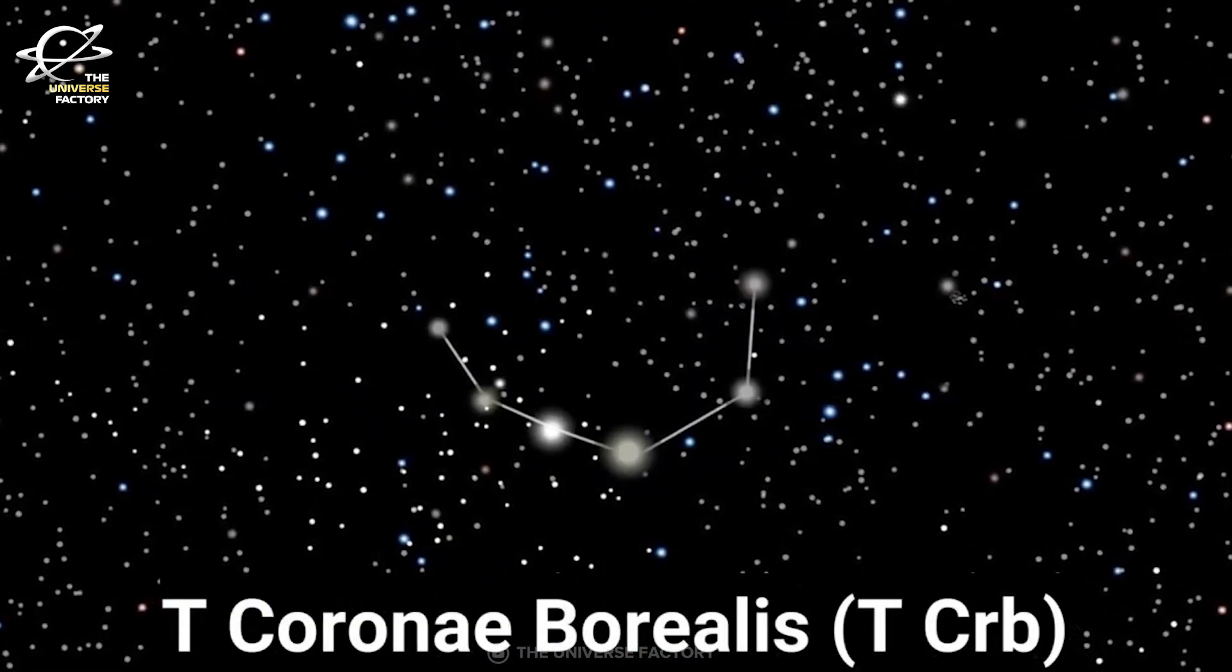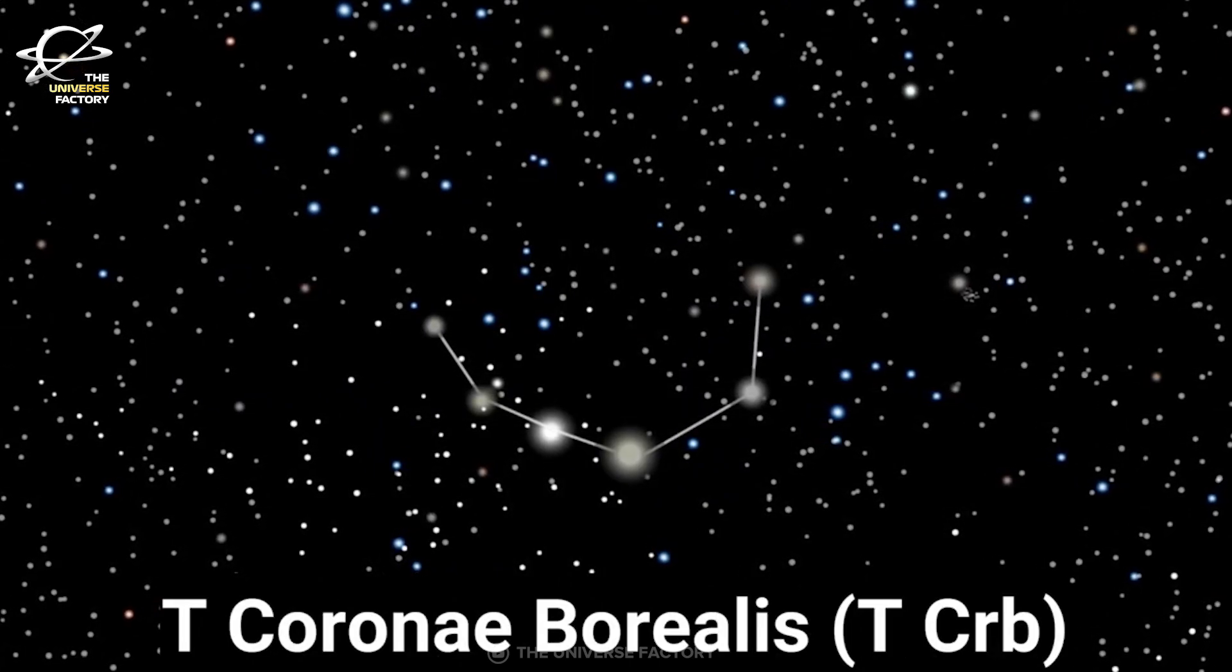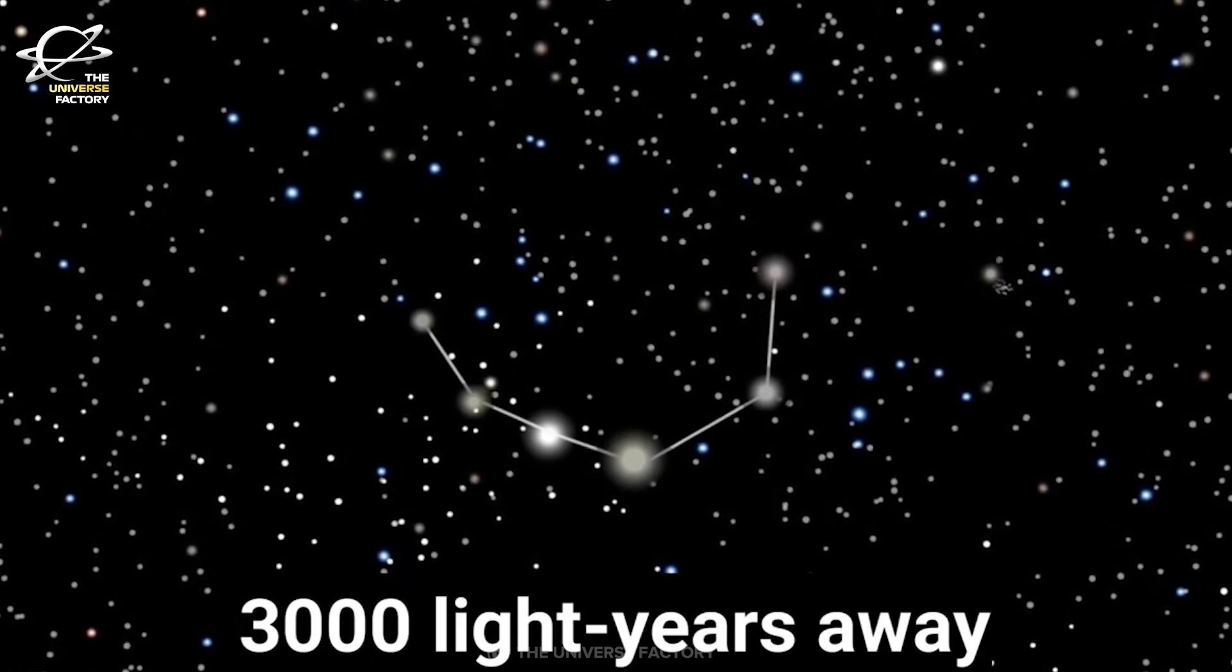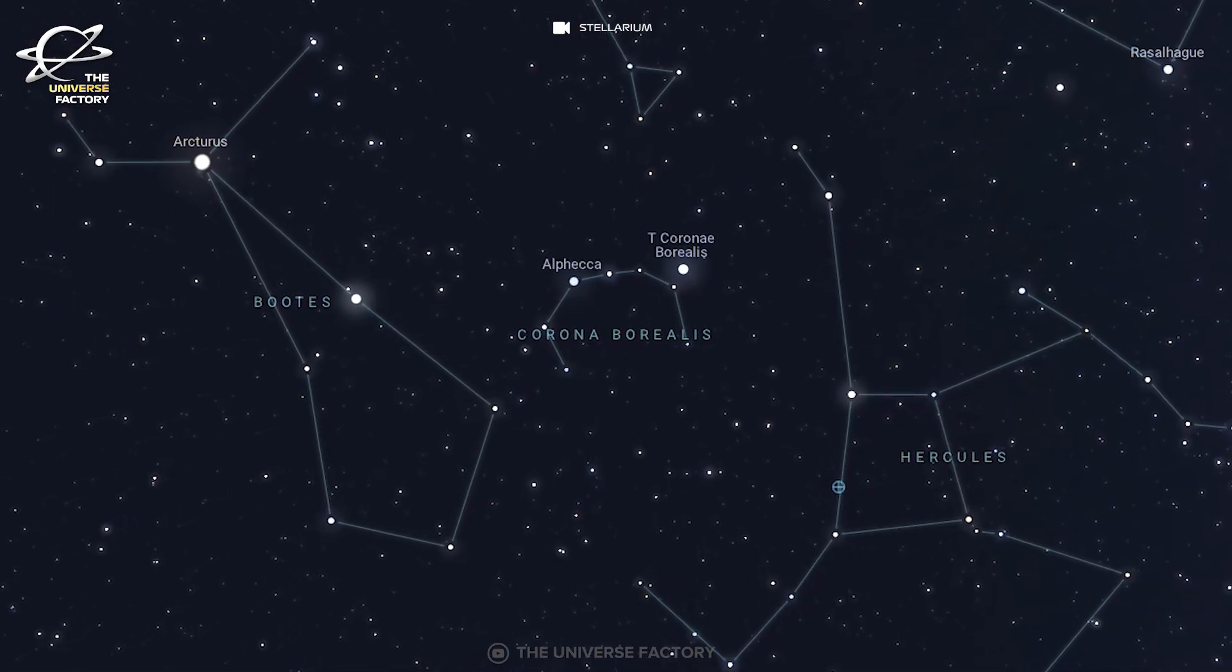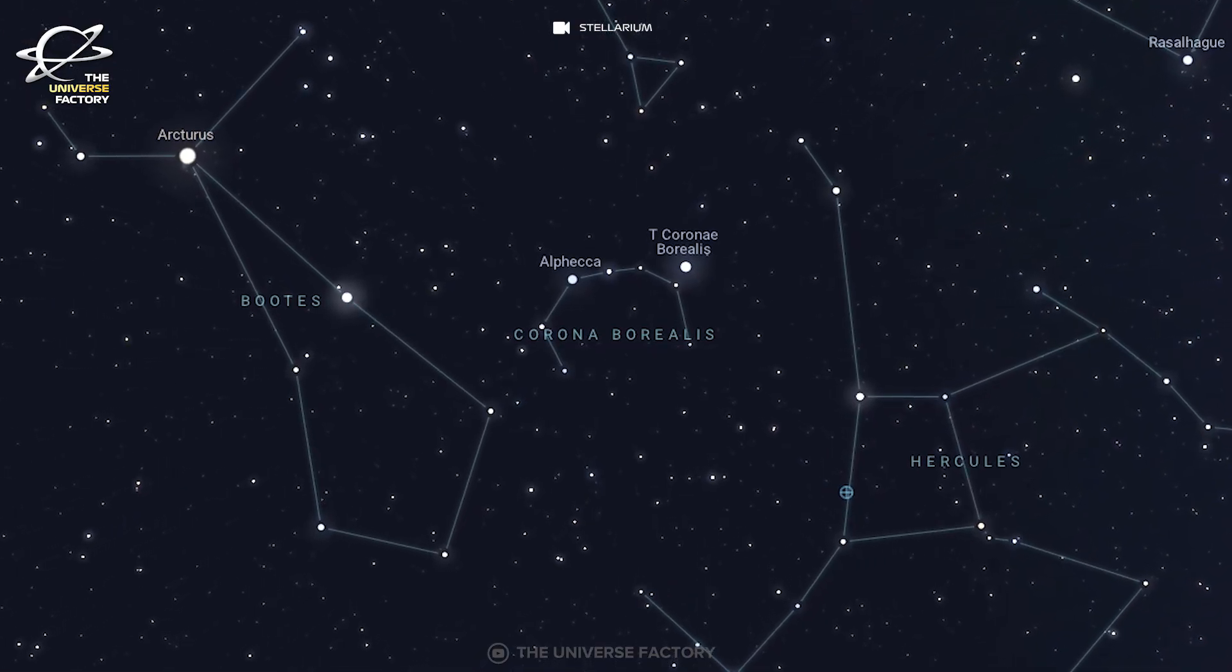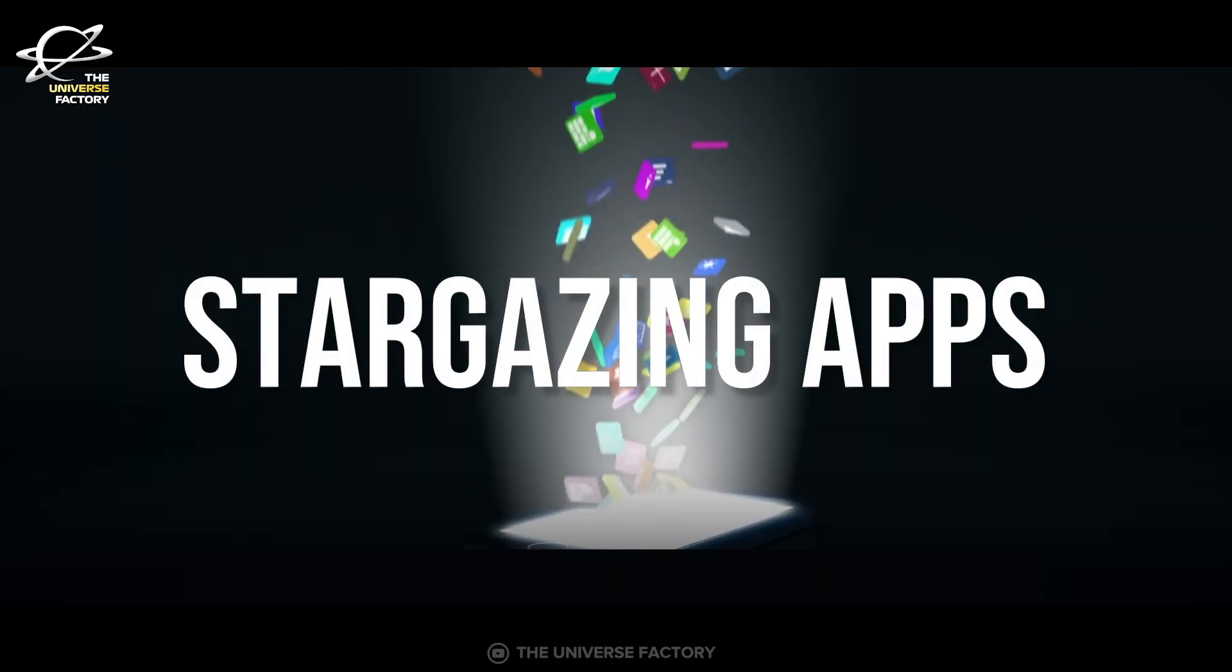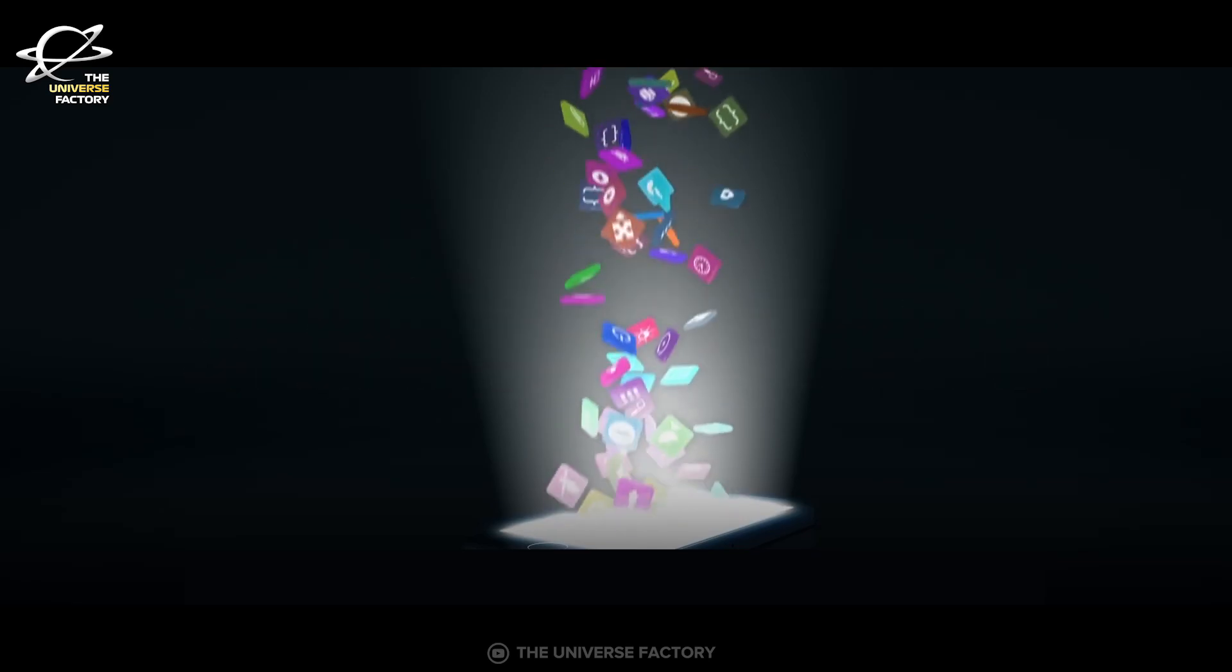The bright blast will appear in the constellation Corona Borealis, a small semi-circular arc between the constellations Hercules and Boötes. This is where the outburst will appear as a new bright star. Check out the description where I have mentioned some popular stargazing apps that will help you easily locate constellations and stars in the night sky.